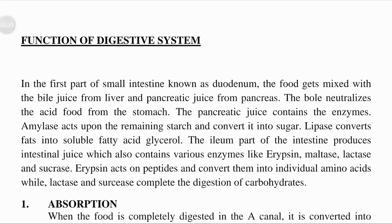In the first part of the small intestine, known as the duodenum — the small intestine is the part of the intestine that runs between the stomach and the large intestine — the food gets mixed with bile from the liver and pancreatic juice from the pancreas.